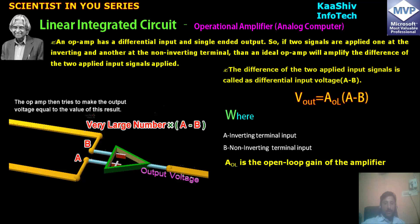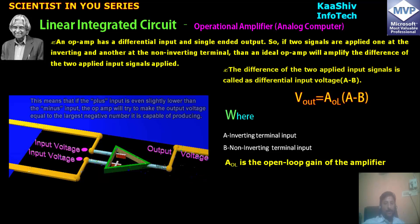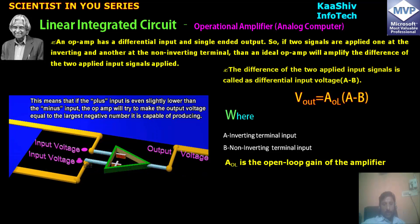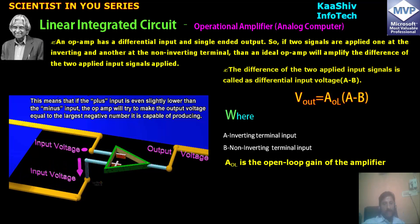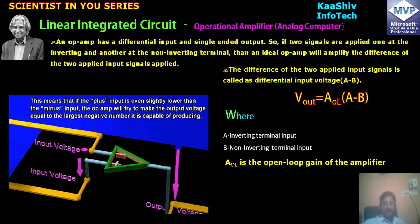For a typical example of a difference in voltage — obviously the output voltage will differ a lot. I have two input voltages with one output voltage. When the positive input is negative, the output voltage will obviously produce a huge negative value. That is the largest negative number of its capability.